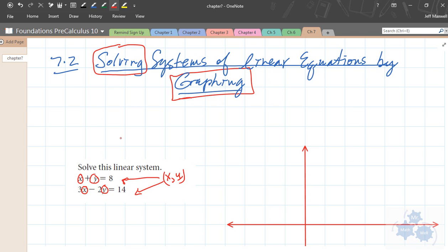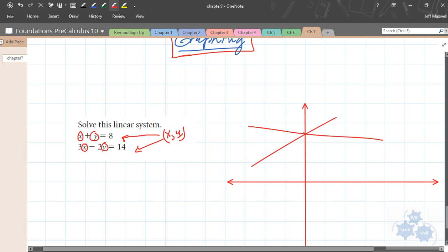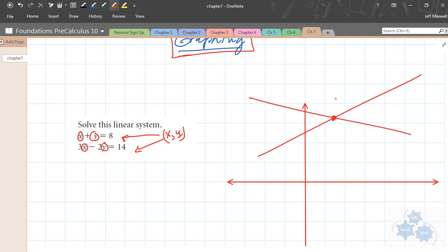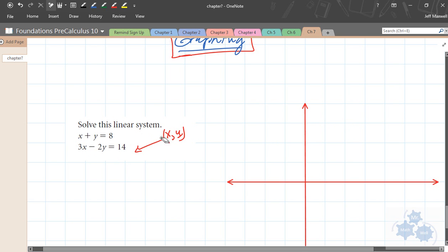I hesitate to use the term intercept because that usually means a point on one of the axes. It doesn't necessarily cross at an axis, but the lines would cross at a point somewhere, and this would be the solution that we're after. So graphically, what a solution to a system of linear equations looks like is the intersection point of the two lines. That's what we're going to do today.